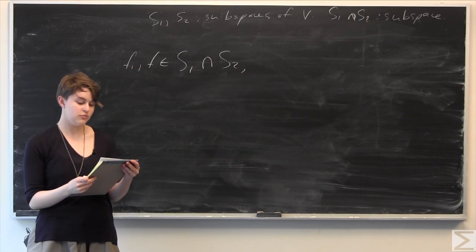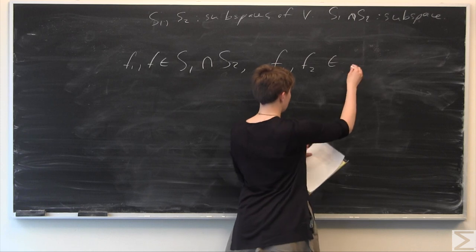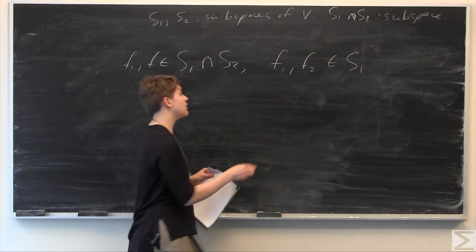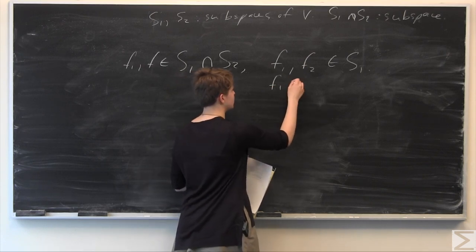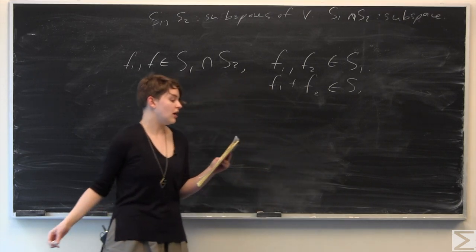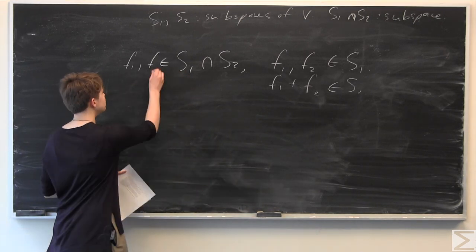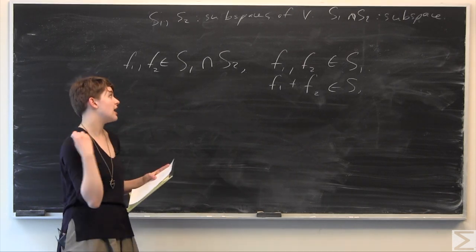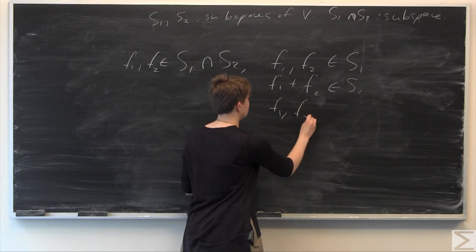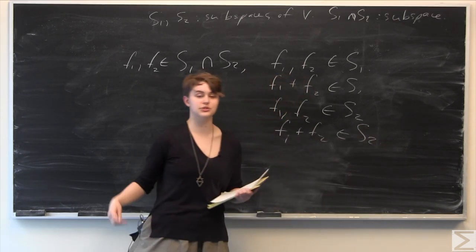We know by definition of the intersection that both F1 and F2 are in S1. Since S1 is closed under scalar addition, this implies that F1 plus F2 is also in S1. Similarly, since F1 and F2 are in S1 intersect S2, they are also in S2, which means F1 plus F2 is also in S2, because S2 is closed under scalar addition.